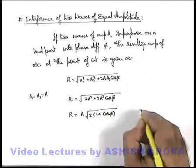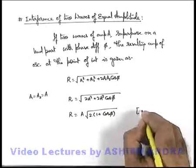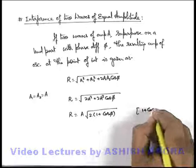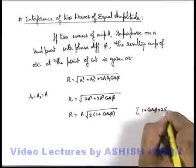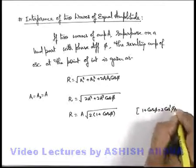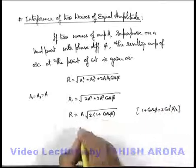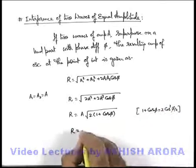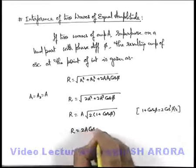By using half angle identity, I hope all of you know that 1 plus cos φ we can write as 2 cos square φ by 2. If you substitute it here, the value of R will be 2A cos φ by 2.